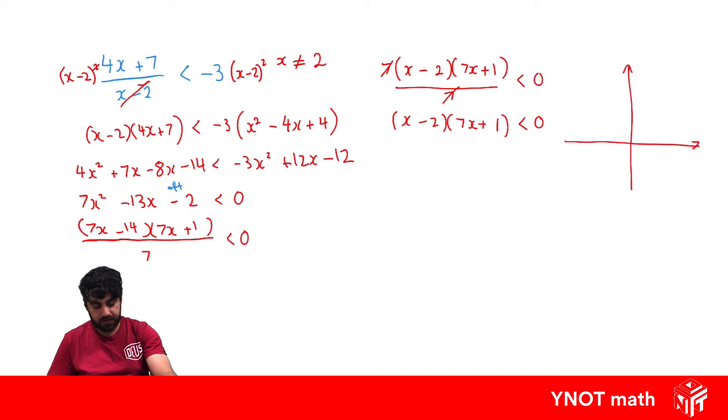And let's go ahead and do a little graph. So we know the x-intercepts at 2 and minus 1 over 7, and the y-intercept is going to be at minus 2. It's concave up because the x squared term is positive.